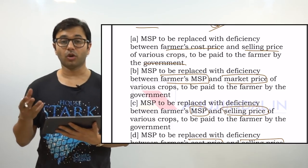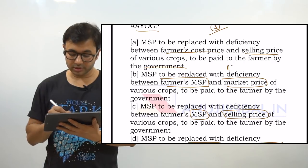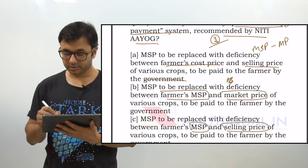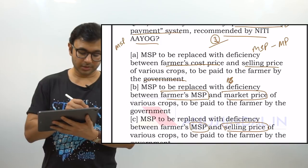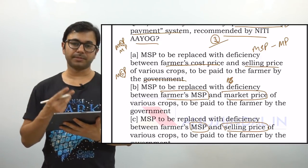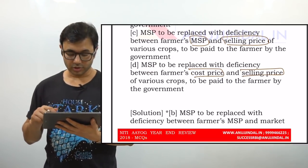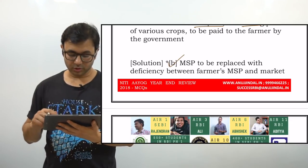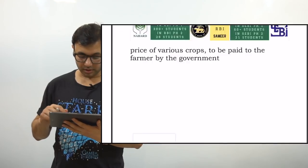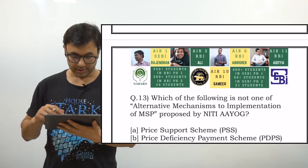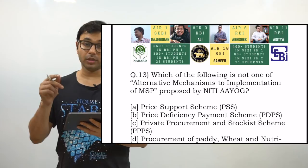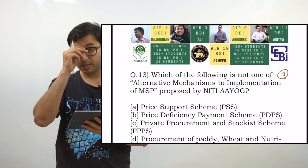The correct answer is B — MSP and market price. A mnemonic to remember: write MSP and circle the S, meaning MSP converts to MP (market price). So the answer is B: MSP to be replaced with deficiency between farmers' MSP and market price. There is another question on this area, and then we will discuss all three recommendations provided by NITI Aayog.